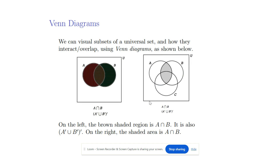The brown shaded region is A intersection B that we can see here. The two sets are overlapping each other, A and B, and the shaded brown region shows that it is an intersection part. We can show three sets also which are interacting to each other. The right hand side diagram shows the Venn Diagram on three sets and the shaded portion shows the part A intersection B.